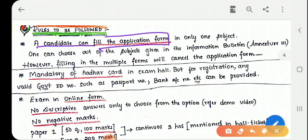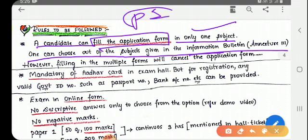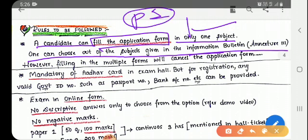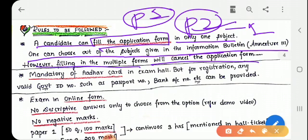You have some rules to be followed. A candidate can fill the application form in one subject only. One can choose out of the subjects given in the information bulletin Annexure 3 of NTA website. You should choose your subject. Paper 1 is common for everyone. You will have Paper 1 and for Paper 2 you should select only one subject. However, if you select more than one subject the application form will be cancelled automatically.